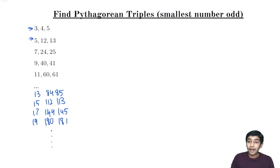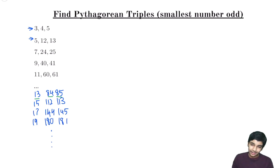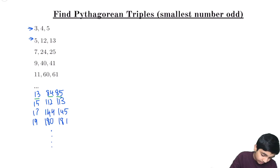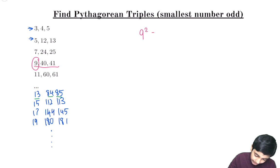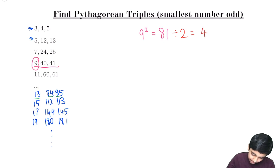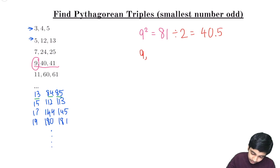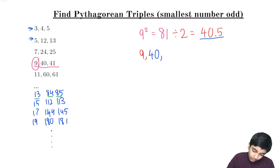You might ask how I'm calculating these so fast. Of course, I'm not squaring these numbers and then taking the square root, because that would take way too long. Instead, I'm using a very special trick. Basically, let's take 9, 40, 41 as an example. We square 9, so 9 squared equals 81. Then we divide by 2 to equal 40.5. So the Pythagorean triple will just be 9, then 40.5 minus 0.5 which is 40, and then 40.5 plus 0.5 which is 41. And this is a Pythagorean triple.